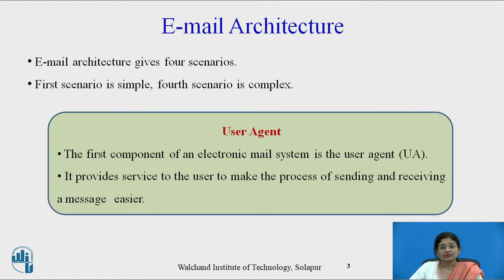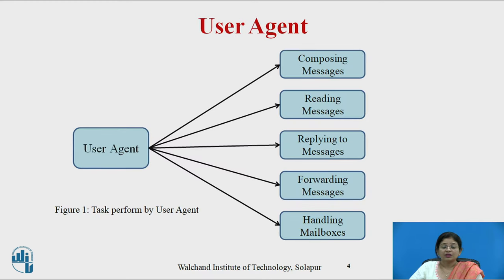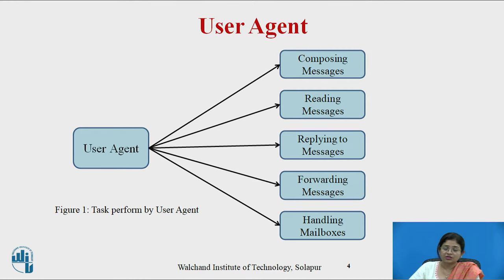The user agent is the first component of the electronic mail system. It provides services to the user to make the process of sending and receiving messages easier. The user agent performs various tasks: composing messages, reading messages, replying to messages, forwarding messages, and handling mailboxes. There are two types of user agents — command-driven user agents and GUI-based user agents — which we will see in the next video.